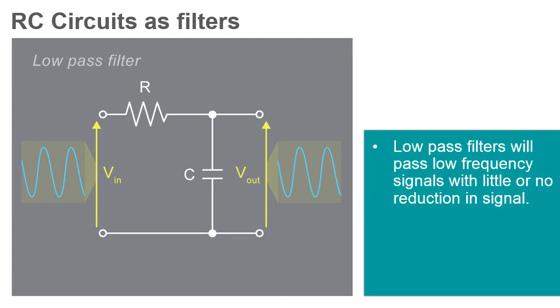Low-pass filters will pass low-frequency signals from the input to the output with little or no reduction in signal or attenuation, while high-frequency signals will be reduced or attenuated significantly, almost to zero in some cases. Low-pass filters are often used as voltage spike protection circuits.